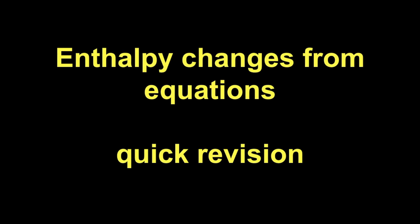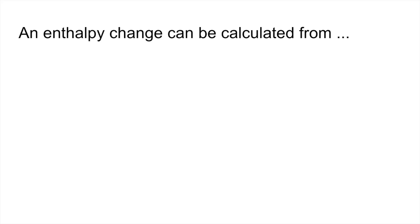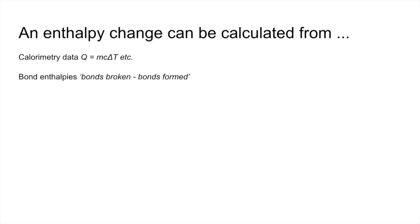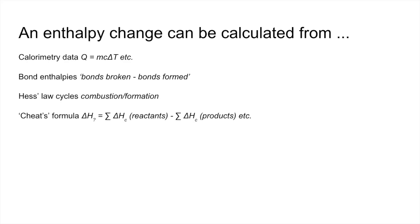This is a quick revision video on enthalpy changes from equations. There are lots of different ways to calculate an enthalpy change: from calorimetry data using Q = mcΔT, from bond enthalpies using bonds broken minus bonds formed, Hess's law cycles using combustion or formation cycles, and the cheat formula — the sum of enthalpies of combustion of reactants minus products, or for formation values, products minus reactants.